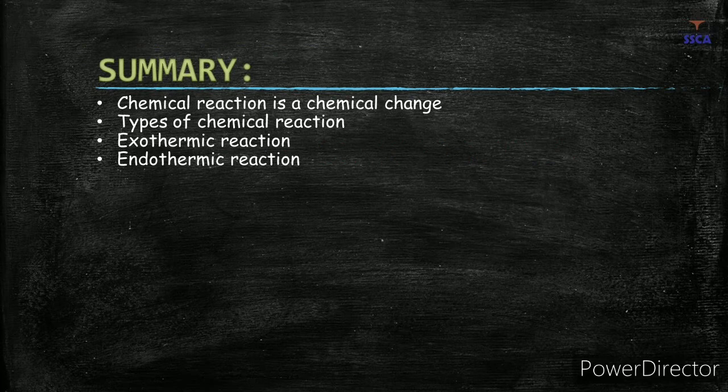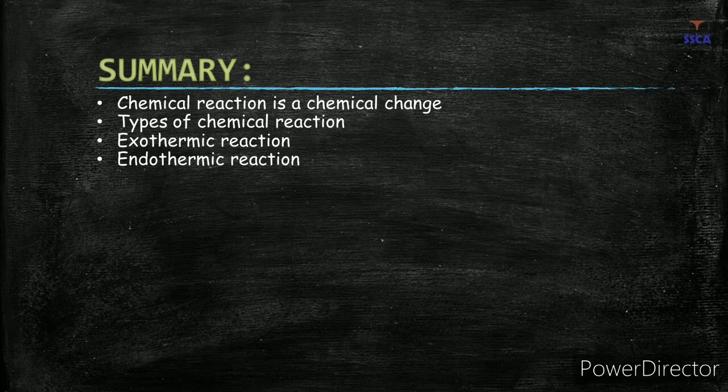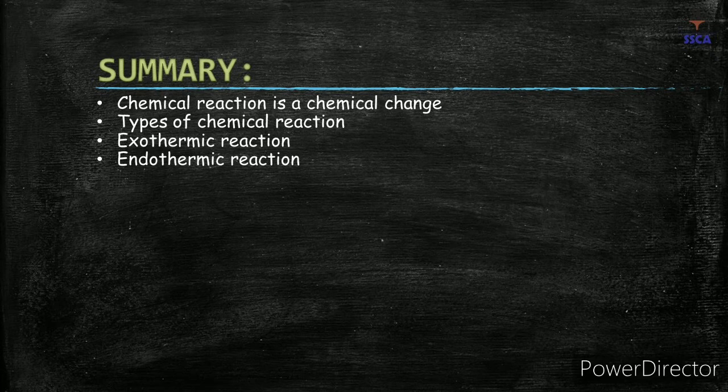Now let's summarize what we have learned today. We learned that a chemical reaction is a type of chemical change in which the composition of a substance changes. There are five types of chemical reactions: decomposition, addition, single replacement, double replacement, and combustion. Some reactions are exothermic — heat is released — and some are endothermic, where heat must be absorbed or supplied.